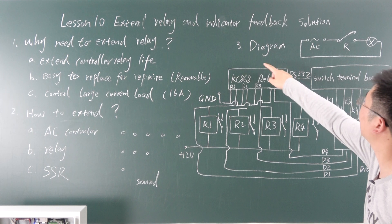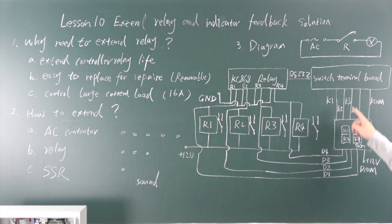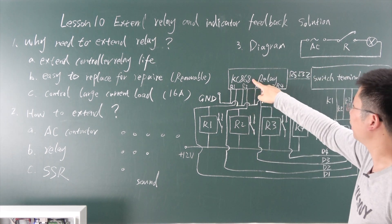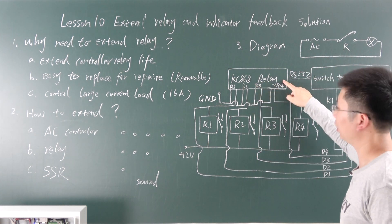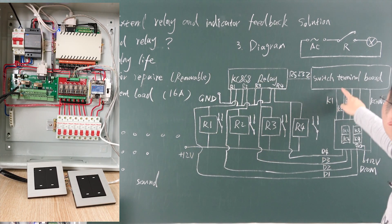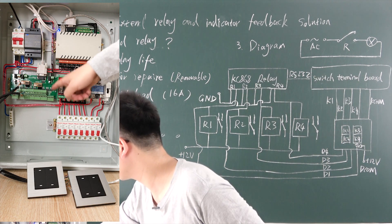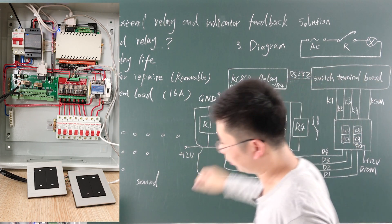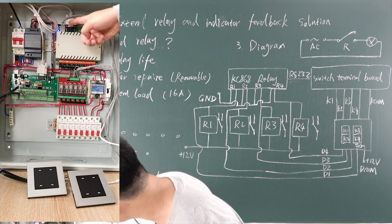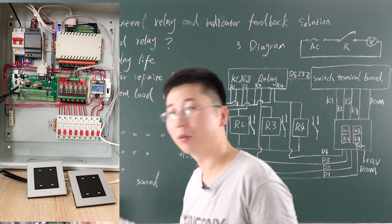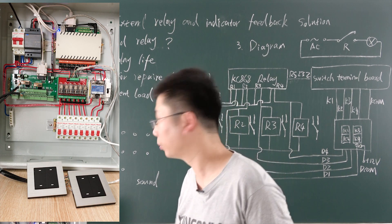Now we can look at the diagram. This schematic shows the case 868 relay controller — I am using the 8-channel version, though you can use any channel count. This is connected to the switch terminal board using an RS232 cable. They connect directly and work without internet — no network required.